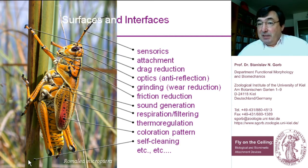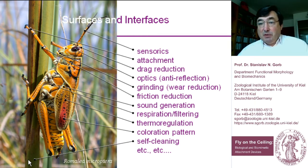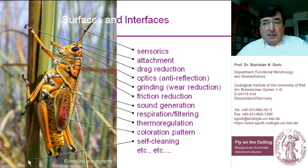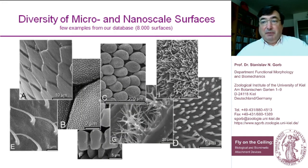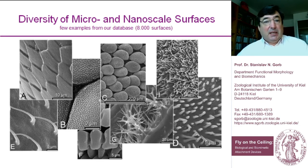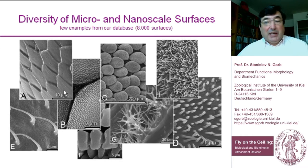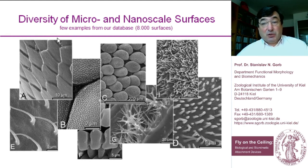These surfaces are interesting not only for biologists but very much for engineers and material scientists as well. We are not very good at chemistry, but we are very good at microscopy and force measurement. That is why we concentrate our studies on micro- and nanostructure-related effects. We have a database of more than 8,000 surfaces in biology with certain functions.